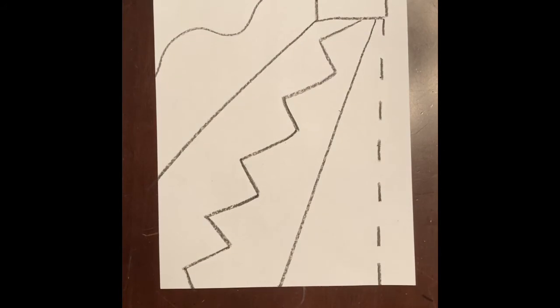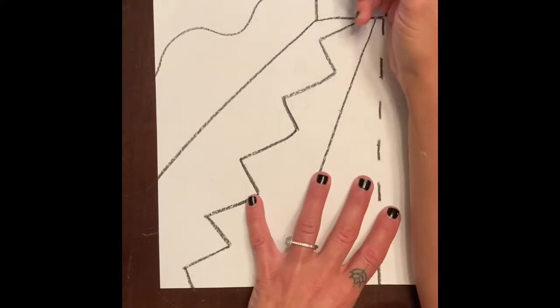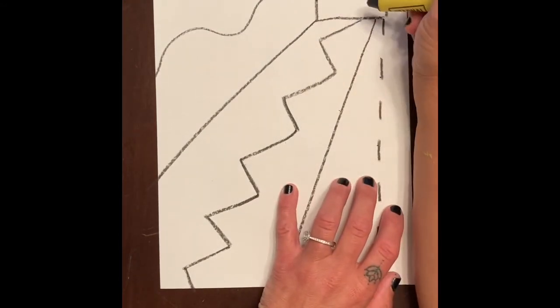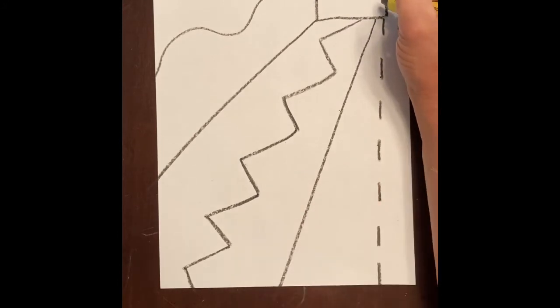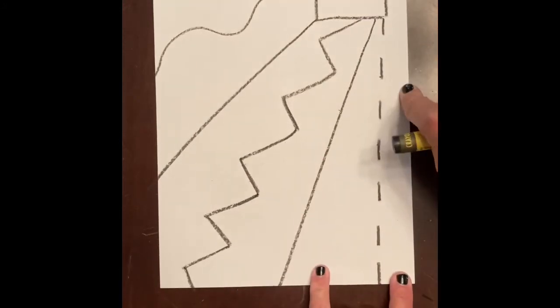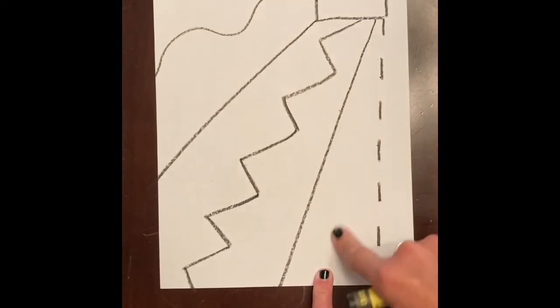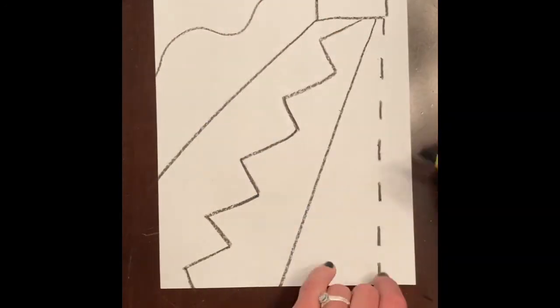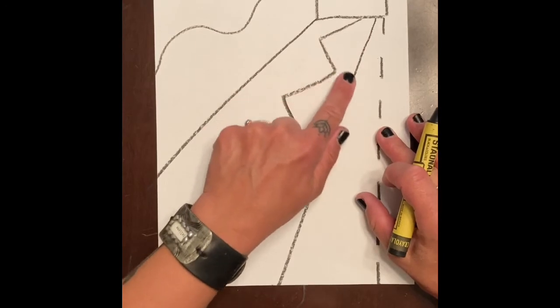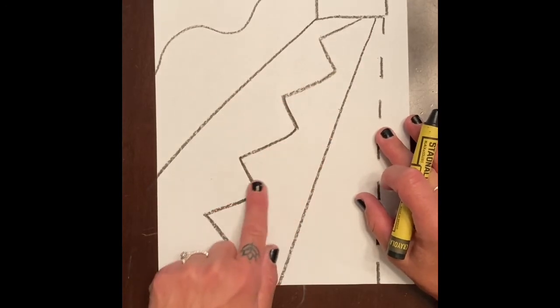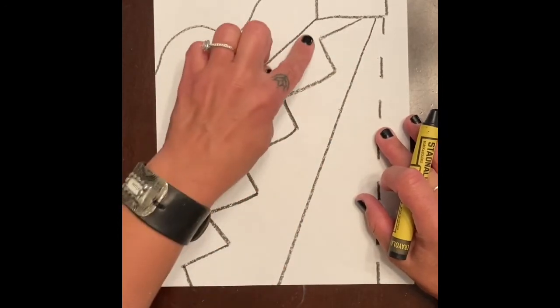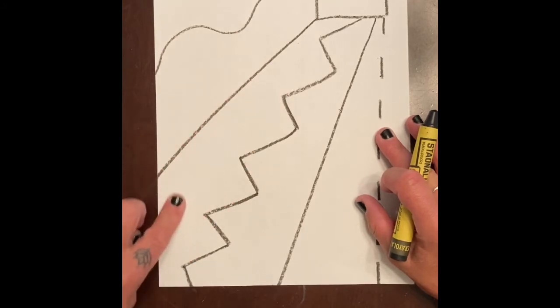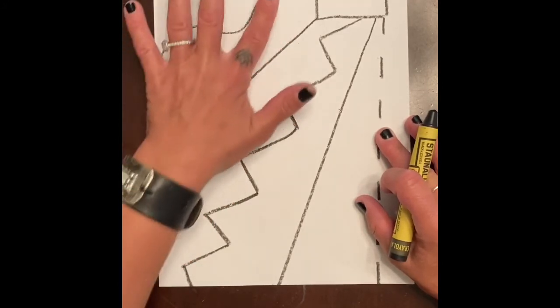The first thing I'll do is color my shape in black. Then every space is going to get a different color. That means this section here will get one color, this section will get another color, this one, and so on.